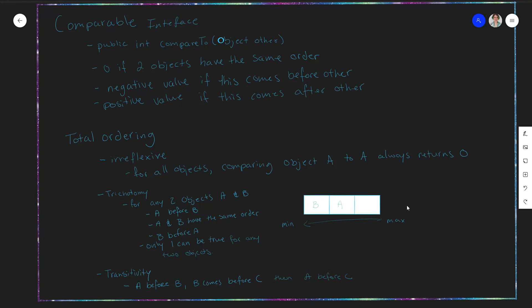We should also note that returning zero from compareTo should relate to the equals method we talked about before. The result of compareTo being zero should be consistent with what equals would return.